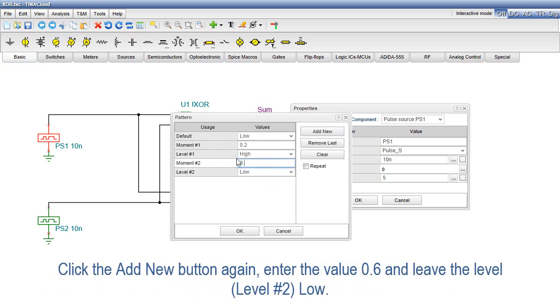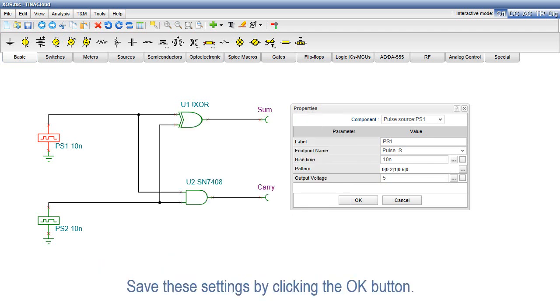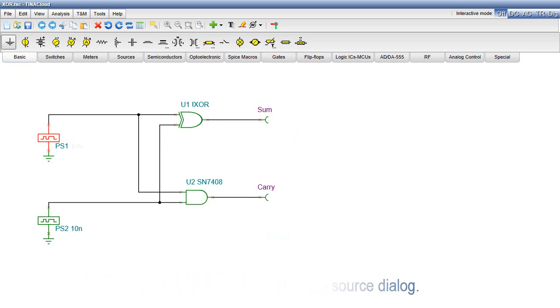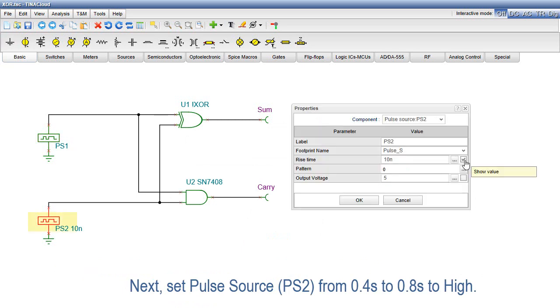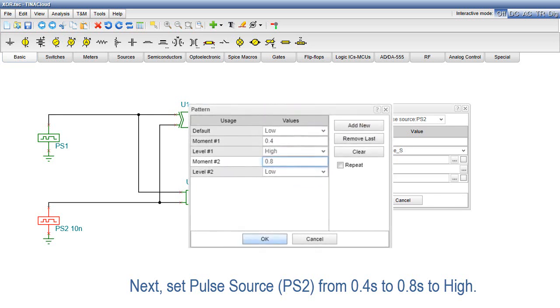Click the Add New button again. Enter the value 0.6 and leave the level, Level No. 2, low. Save these settings by clicking the OK button. Press OK to close the pulse source dialog. Next, set pulse source PS2 from 0.4 seconds to 0.8 seconds to High.